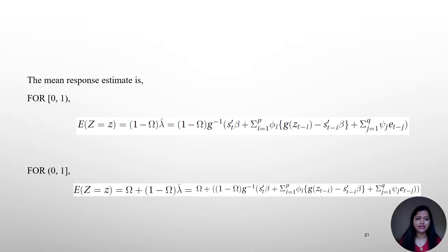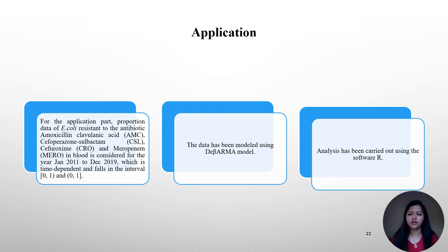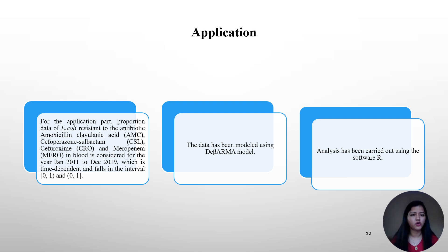This is the mean response estimate, depending on whether 0 or 1 is included. For the application part, I concentrated on the bacteria E. coli resistant to different antibiotics for the year January 2011 to December 2019. This data was modeled using the Degenerate Beta ARMA model and analysis was carried out using the software R.